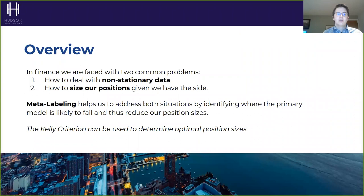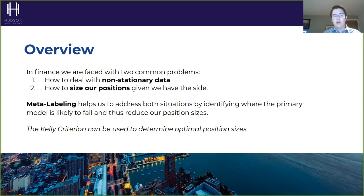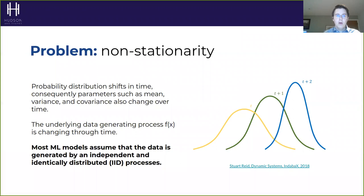A quick overview of the lecture: we're going to be focused on meta labeling and how it helps us solve two problems. The first is the problem of non-stationary data. The second is determining what the size of our position should be — ideally, the more confident our model is, the higher the position we'd like to take. Meta labeling helps us address both situations, and we can then strap on the Kelly criterion to figure out what the optimal position sizing is.